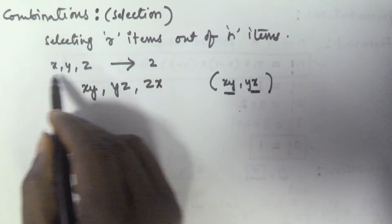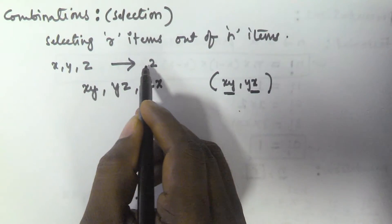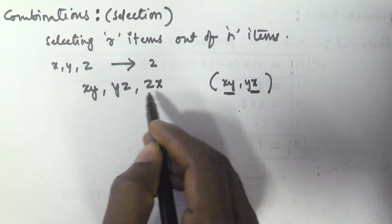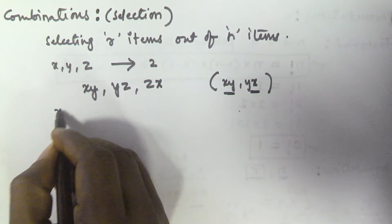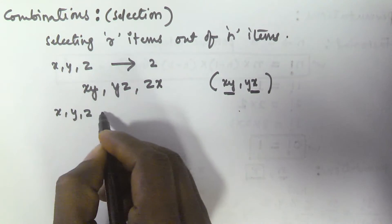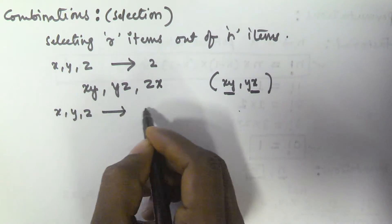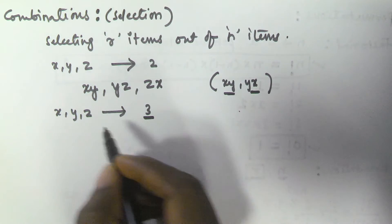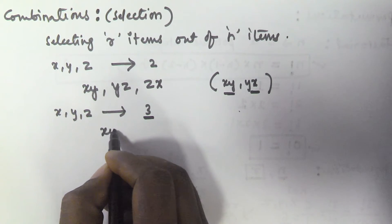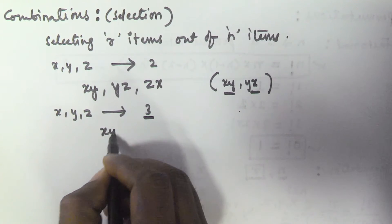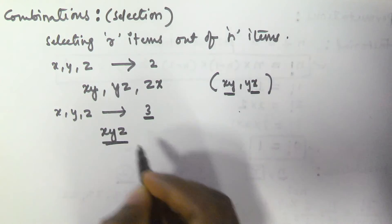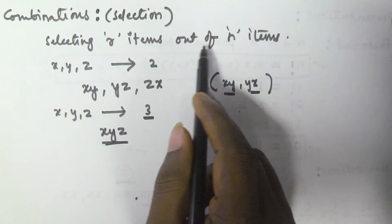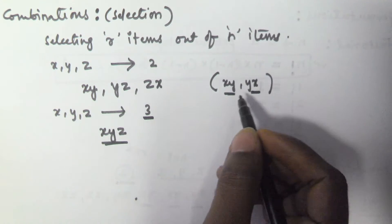So selecting two items out of x, y, z — the possibilities are x,y, y,z, and z,x. In the same manner, selecting three items out of x, y, z is only one way possible, that is x, y, z. Combination is all about selecting r items out of n items at a given time.